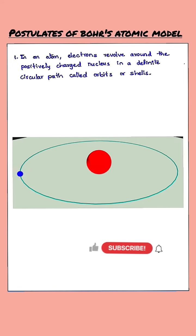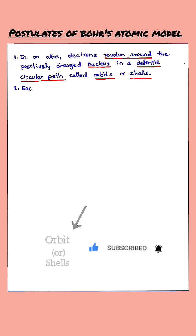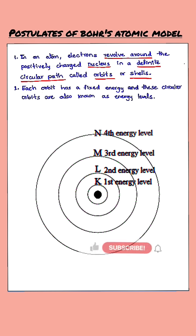The first postulate is in an atom, every electron has its own definite circular path on which it revolves around the nucleus. Those paths are called orbits or shells. The second postulate is every orbit contains a fixed amount of energy levels in it.